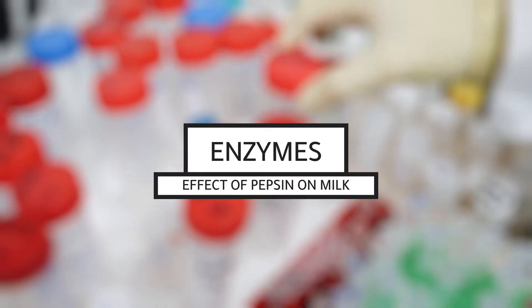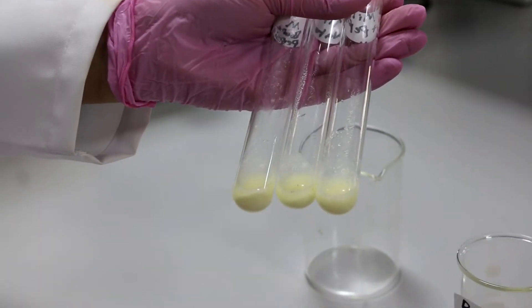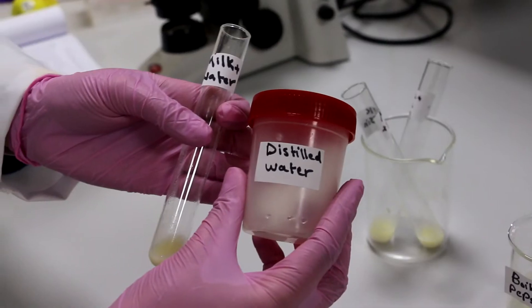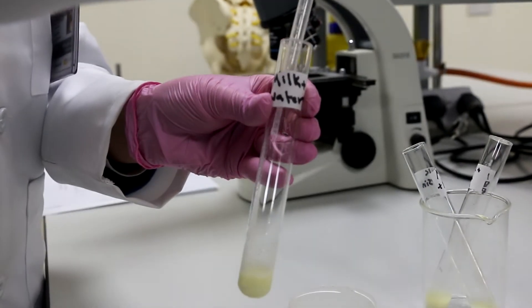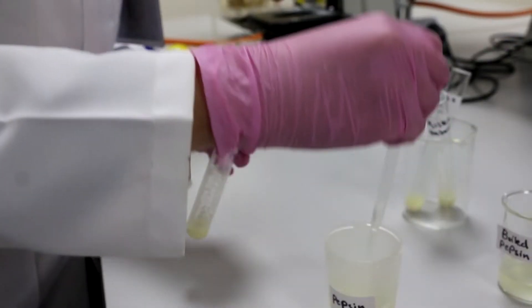Effect of pepsin on milk. Place 3 ml of milk in each of the test tubes. Place 0.5 ml water in one tube, 0.5 ml of pepsin in another.